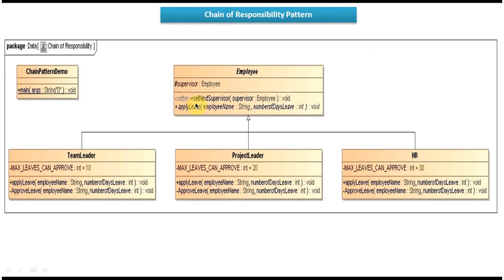Using the setNextSupervisor method, you can set who is the supervisor for each level — for example, the project leader is the supervisor for the team leader. The ChainPatternDemo class contains the main method to demonstrate this pattern. Here, the team leader can approve only 10 days leave, the project leader up to 20 days, and HR up to 30 days.